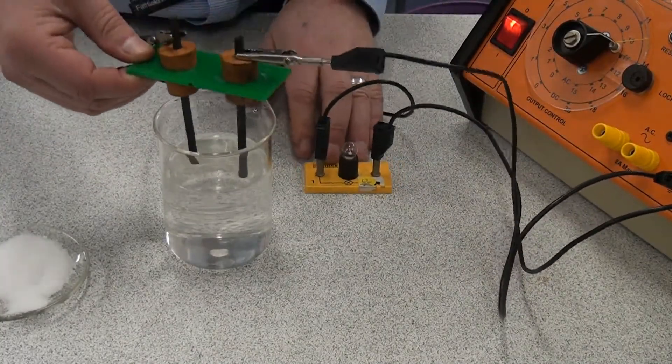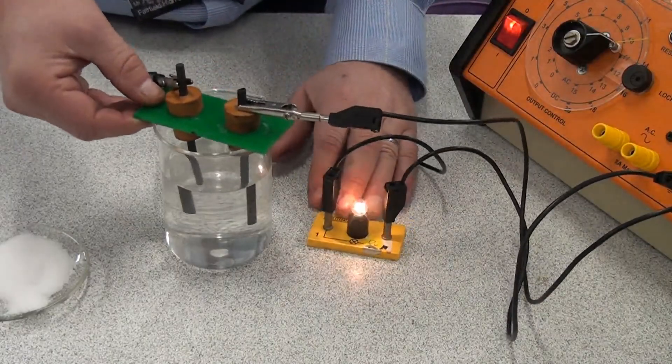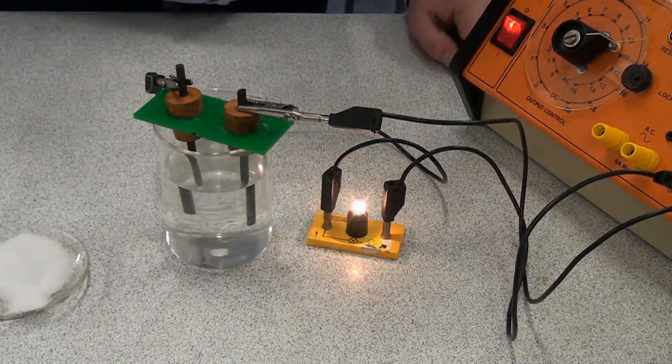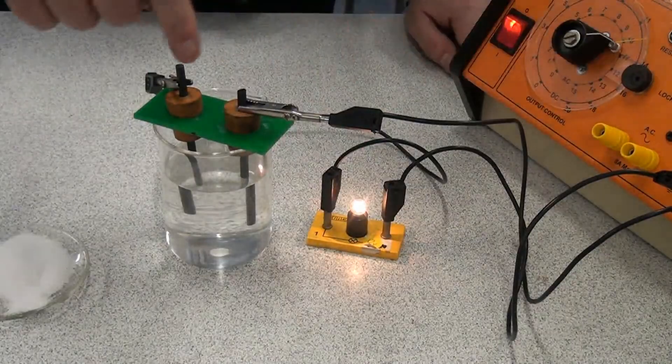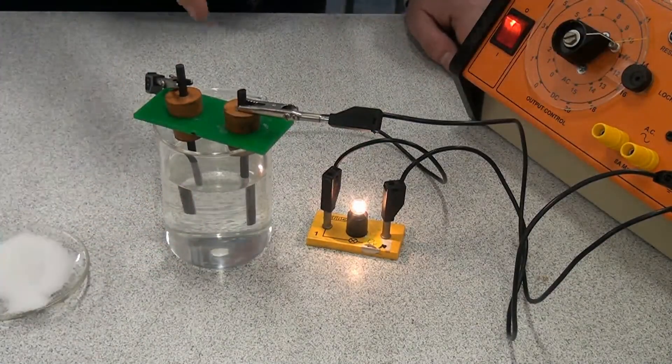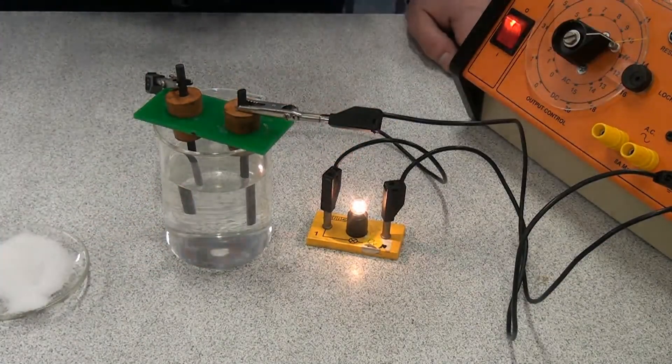So the electrodes are going in. And as you can see the bulb's lighting up. So electricity, the current is flowing down the wires. It's flowing across the solution and making the bulb light up.